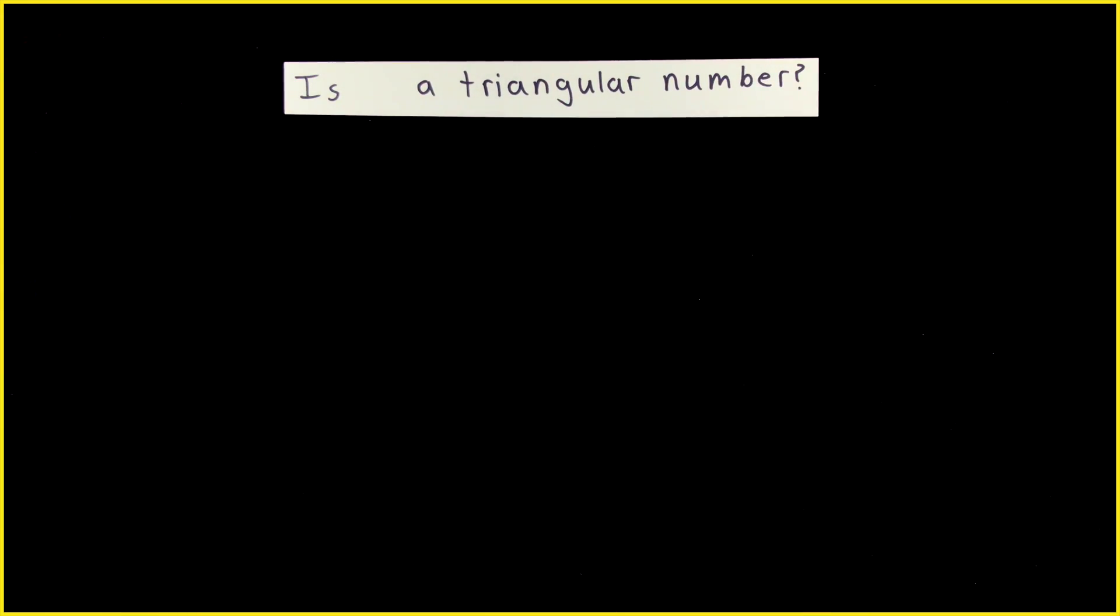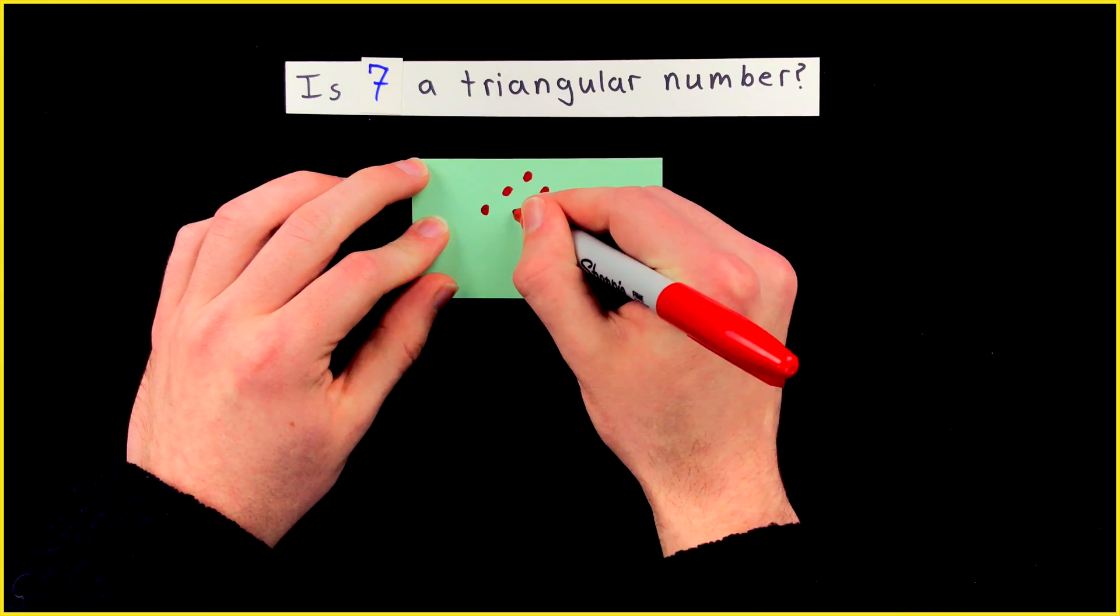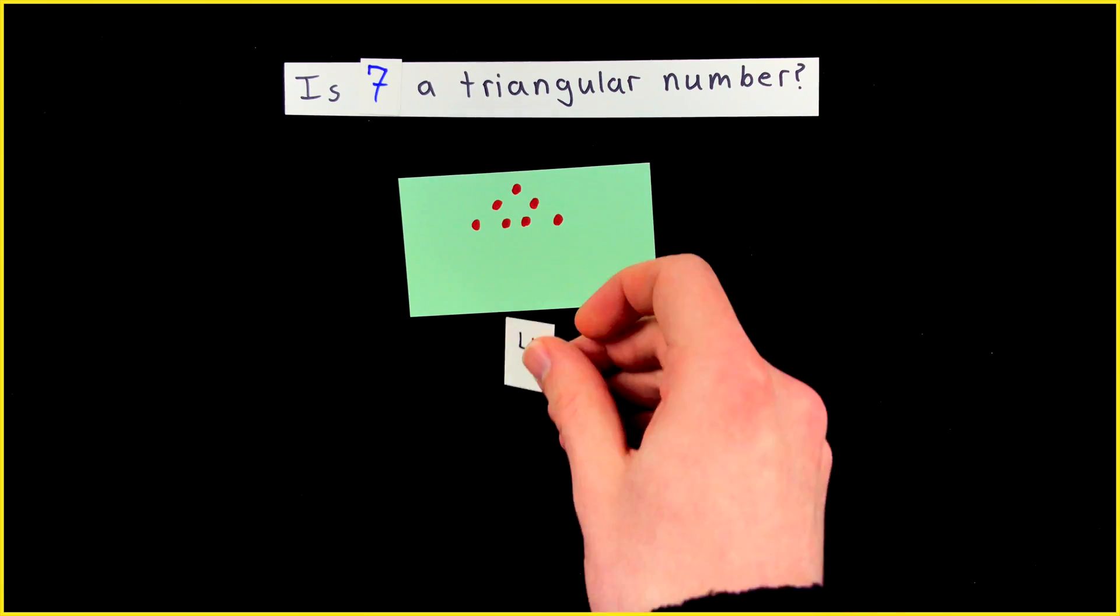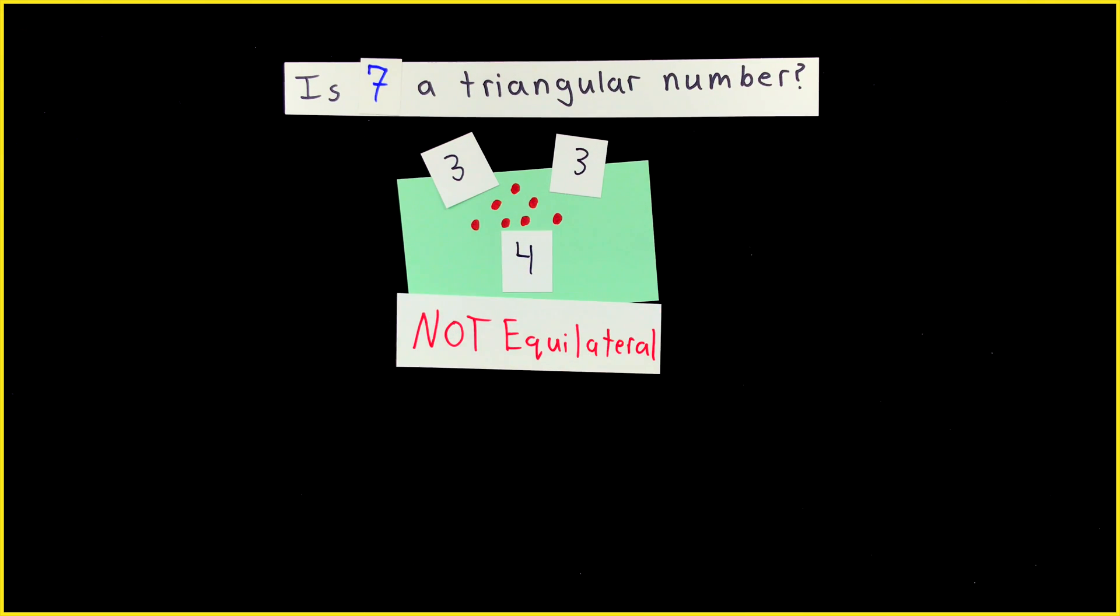Okay, let's fiddle. Pick a number. Seven? Let's try seven. Can we make a triangle with seven dots? Ah, there's one. But that doesn't count. This triangle's side lengths are four, three, and three. That's not equilateral.